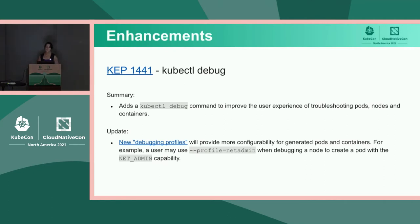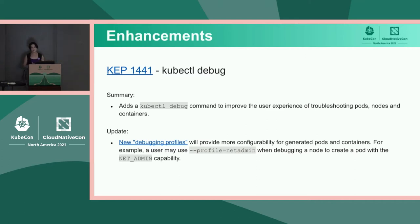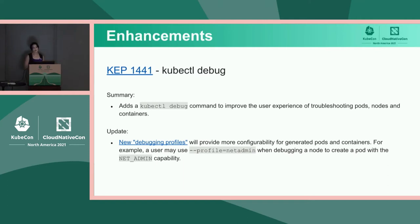The next KEP is kubectl Debug. This one has been implemented for a while, but it has a new feature called Debugging Profiles. This new feature provides more configurability for generated pods and containers created by the kubectl debug command, making it more useful in certain use cases. For example, if you're debugging a node, you might want your pod to be created with the NetAdmin capability — now you can do that by passing --profile=netadmin.